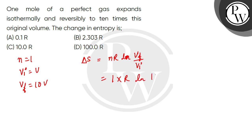You have final volume 10V and initial volume V, so the V's cancel. This gives 1 multiply R ln 10. The value of ln 10 is 2.303, so the overall answer is 2.303R.